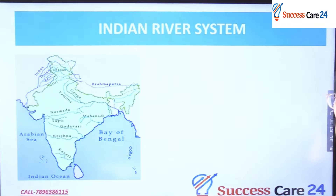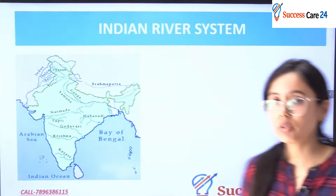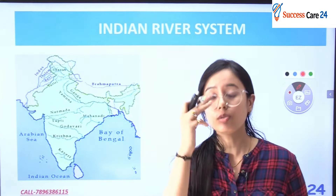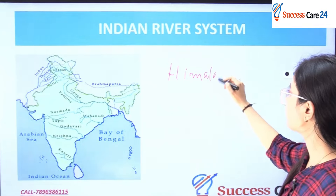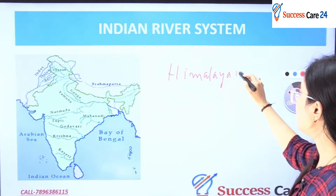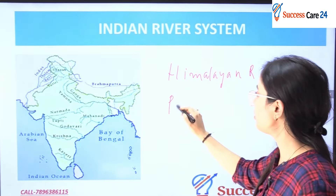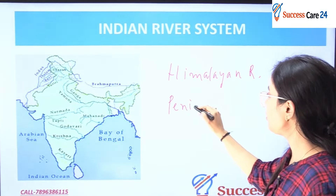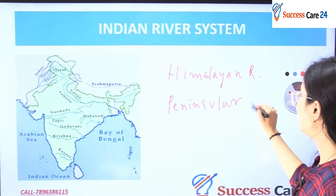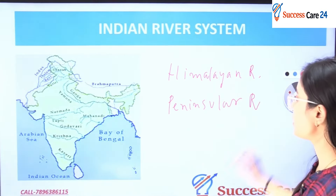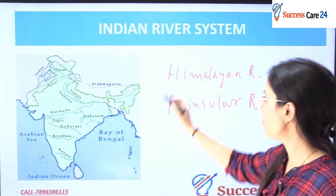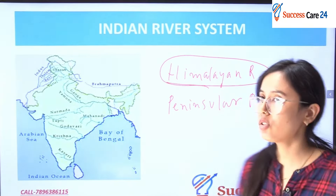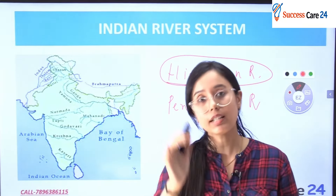In India, we have two types of major river systems. One is the Himalayan River System and the other is the Peninsular River System. The Himalayan River System is in North India, and the Peninsular River System is in South India.